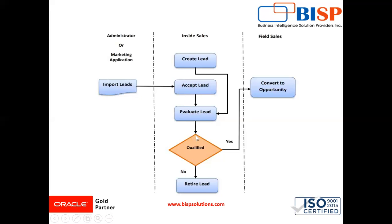When leads meet the qualification criteria, the inside sales representative sets the lead to the qualified status. And if a lead does not meet the criteria, the inside sales representative retires the lead. Field sales representatives review the individual leads assigned to them and convert the promising ones into opportunities.